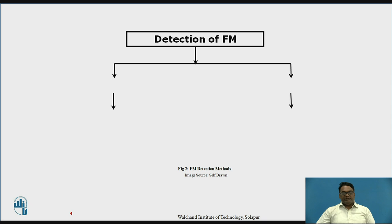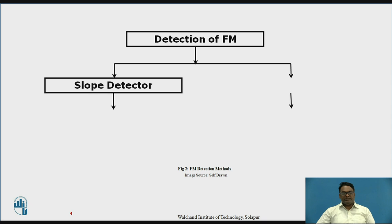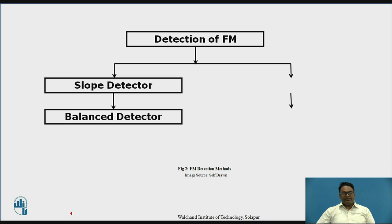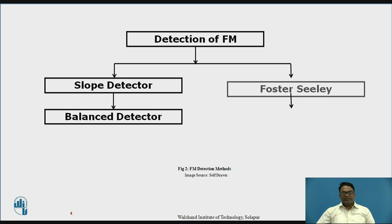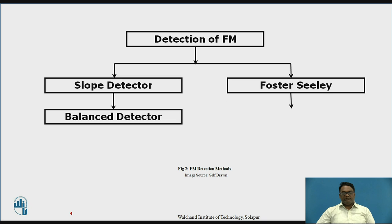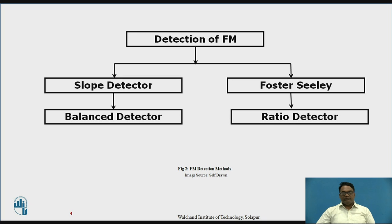Detection of FM can be done using four different methods. The first is the slope detector, the second is the balanced detector, the third is the Foster-Seeley detector, and the fourth is the ratio detector.